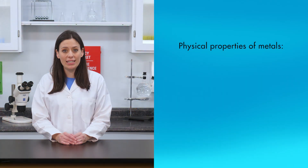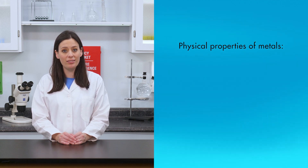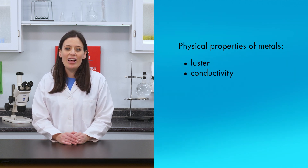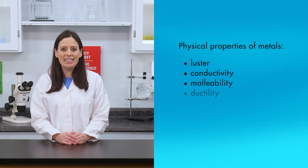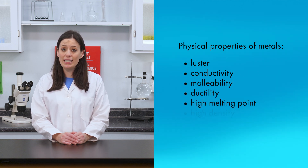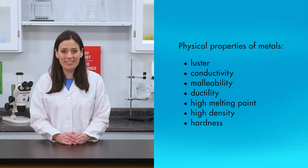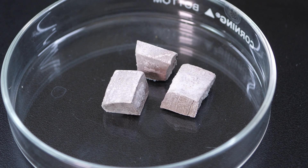Metallic bonding is responsible for the physical properties of metals, such as luster, conductivity, malleability, ductility, high melting point, high density, and hardness. In their pure forms, most metals are not too colorful.